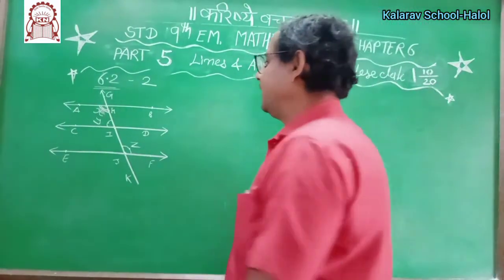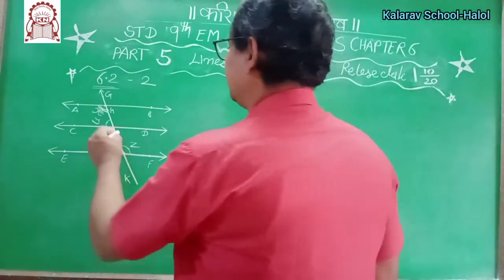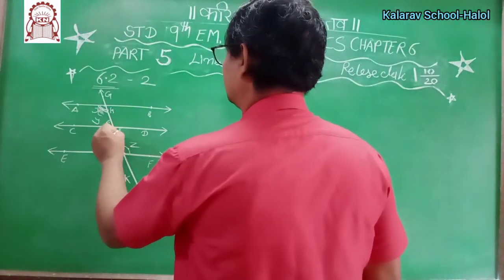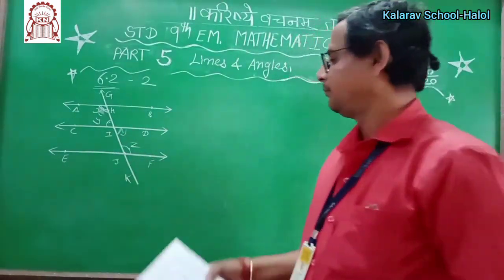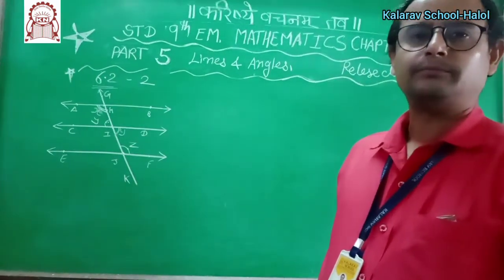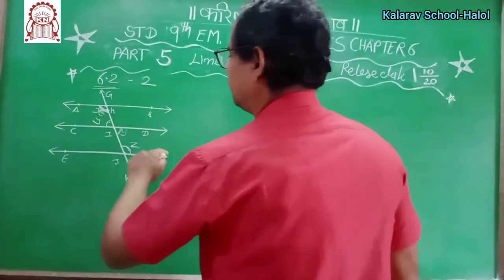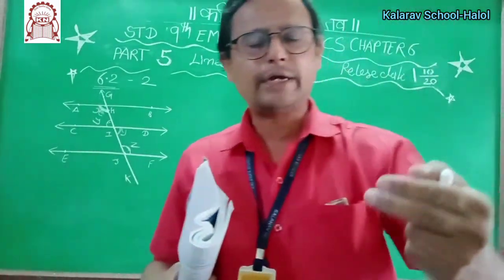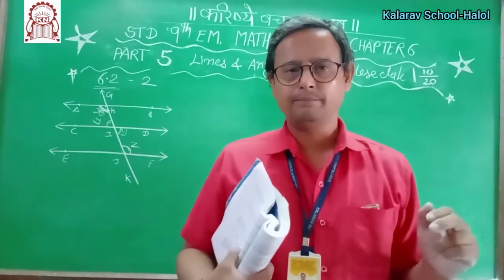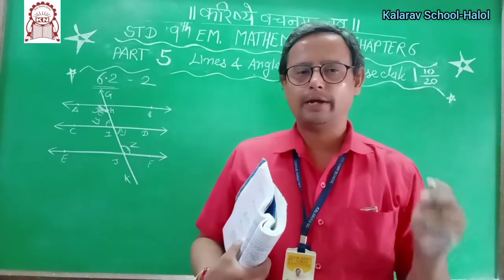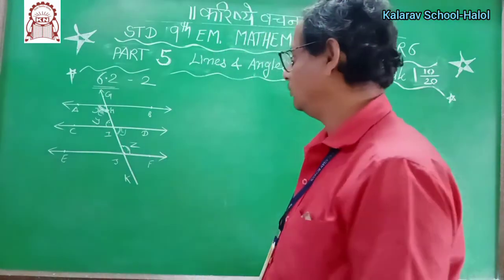Then you have to find the value of X. The value of X is found using a property — co-interior angles on the same side of the transversal are supplementary, so by that law we have to solve it.